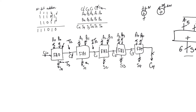And S1 is only ready at TC plus TS, because we have to wait until C0 arrives, which happens after TC. And then we can start calculating in FA1, even though A1 and B1 are ready at time 0. Similarly, C2 is ready at 3TC. And S2 is ready at 2TC plus TS.